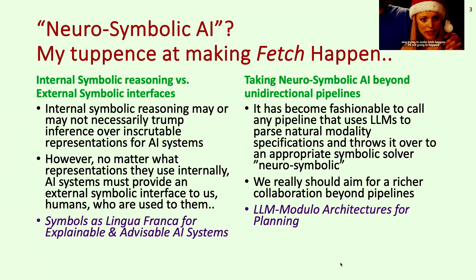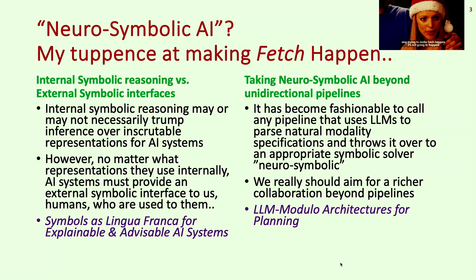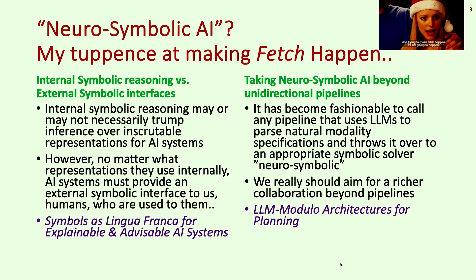I wanted to tell you the two things I do that are most relevant to neurosymbolic systems. One is internal symbolic reasoning versus external symbolic interfaces. I'm not really sure whether machines need to do internal symbolic reasoning, or whether if they do it they'll actually be more effective, but certainly they need to have an external symbolic interface. And we've been doing human-AI interaction with respect to symbols as a lingua franca.